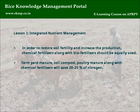Farmyard manure, soil compost, and poultry manure along with chemical fertilizers will save 20-25% of nitrogen.